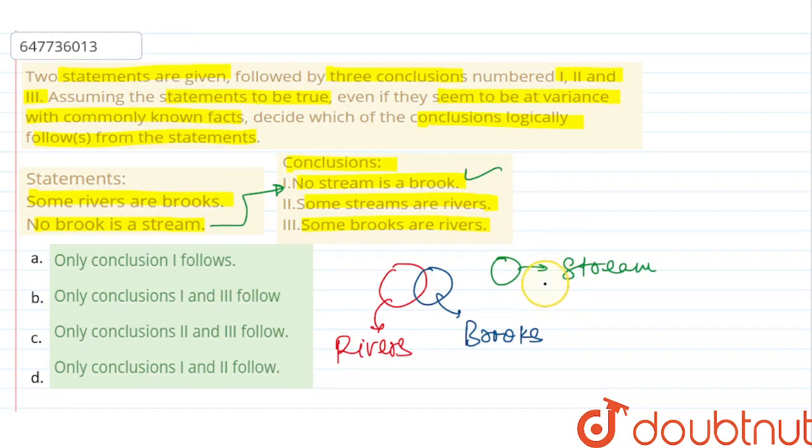In conclusion 2, what do they mean? Some streams are rivers. You don't know about streams and rivers. You don't know about streams and brook.